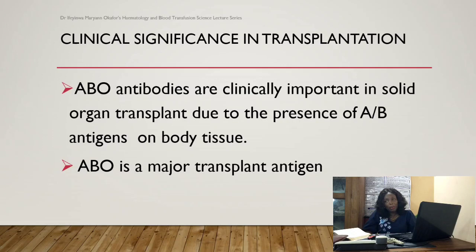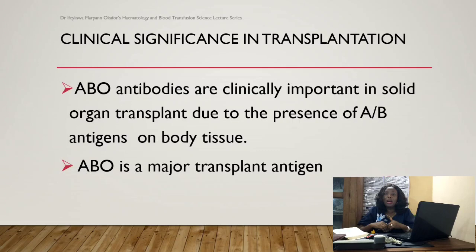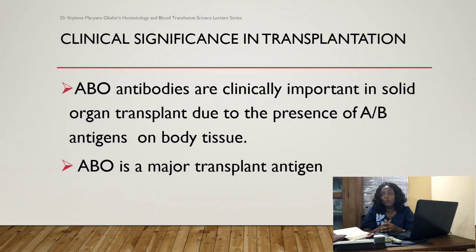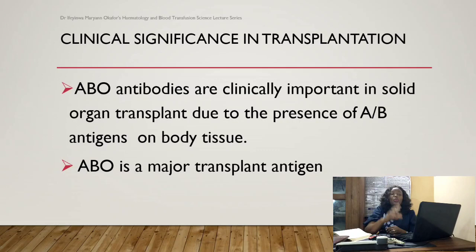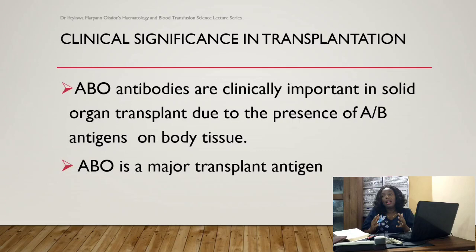Antibodies in the ABO blood group system are also very important in organ transplants because these antigens are present in body tissues — on the surface of almost every cell, organs, and body fluids. Therefore, ABO compatibility must be considered before an organ transplant is carried out. ABO antigens can be considered major transplant antigens and should be taken into consideration when doing compatibility testing for organ transplants.